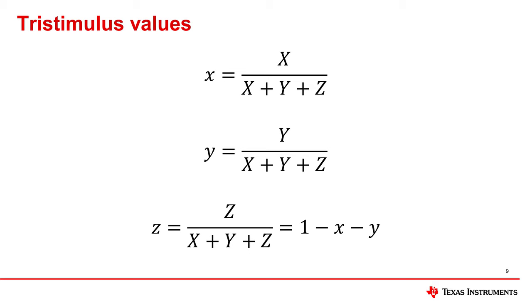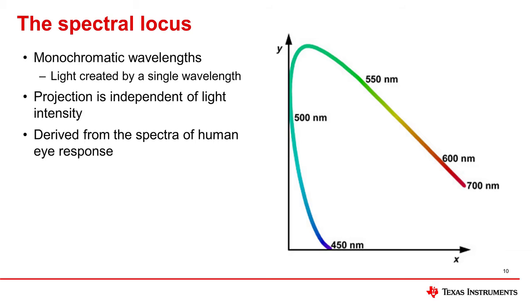Now a projection in the XY plane can be created that does not require a three-dimensional plot. This projection shows the monochromatic wavelengths plotted in a coordinate system that is independent of light intensity. Monochromatic refers to light that is only made up of a single wavelength, and this curve is known as the spectral locus.